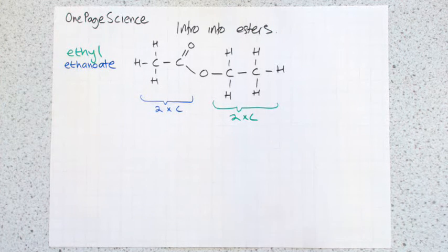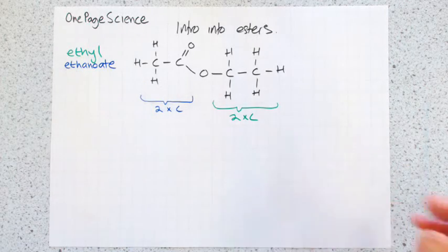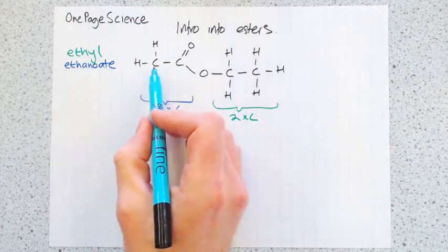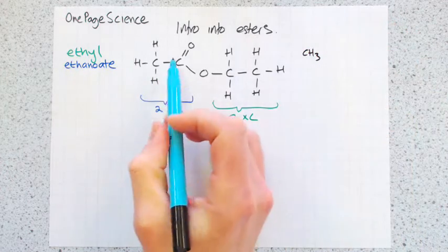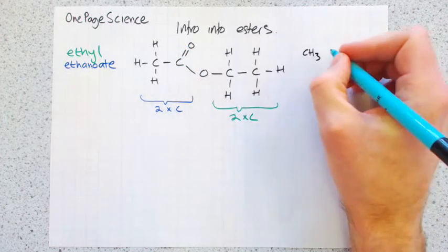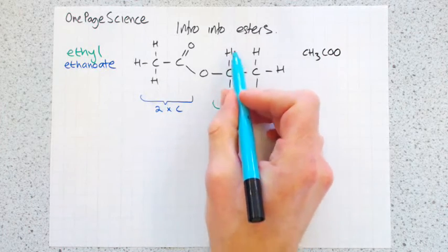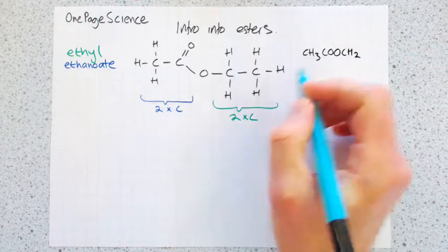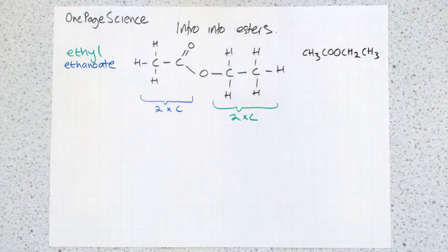And there's another way you can draw them using the structural formula. Similar to before, you start from the left and work your way across one carbon at a time. So first we've got a CH3. And then we have this ester functional group, which is COO. We've then got CH2, and then finishing off with a CH3.